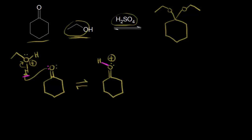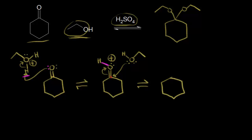These electrons in magenta took this proton and that forms this bond, which gives this oxygen a plus one formal charge. We know that because of a resonance structure we could draw for this, that makes this carbon more electrophilic. So that carbon is going to function as an electrophile, and therefore a nucleophile can react with it. We have a nucleophile present — that would be ethanol. A molecule of ethanol comes along, functions as a nucleophile, a lone pair of electrons attacks our electrophile, and kicks these pi electrons off onto this oxygen. So that would be step two: nucleophilic attack.